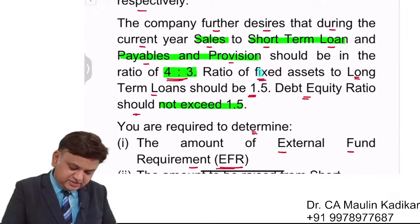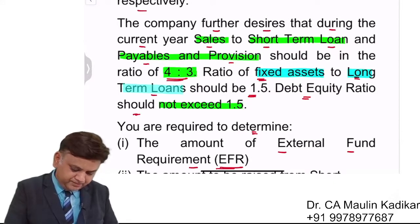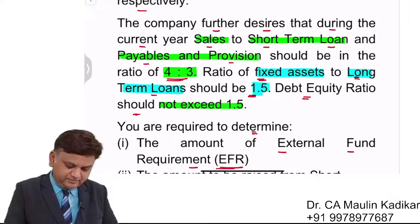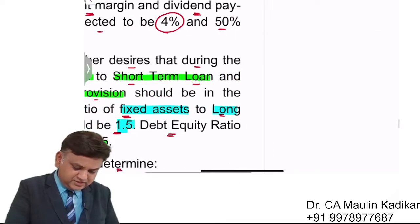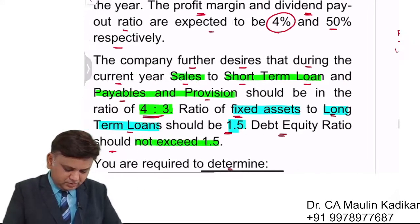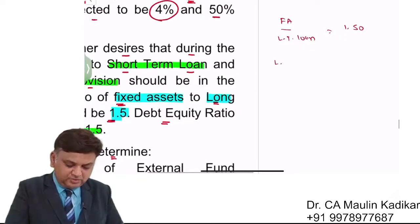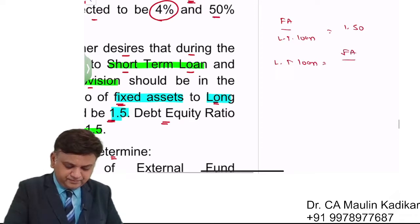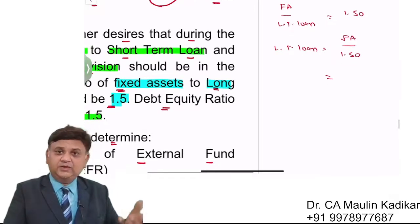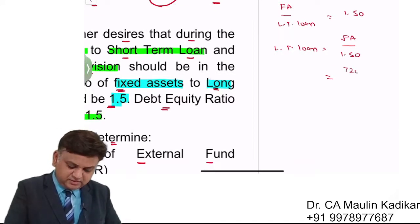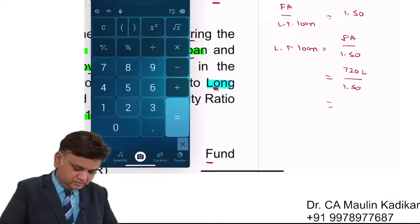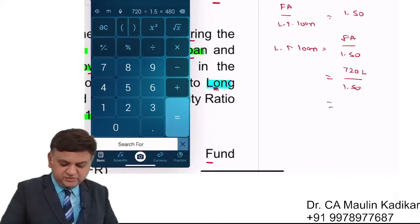The ratio of fixed assets to long-term loan should be 1.5. So long-term loan should be fixed assets divided by 1.5. Fixed assets are 720 lakhs divided by 1.5, giving long-term loan of 480 lakhs.